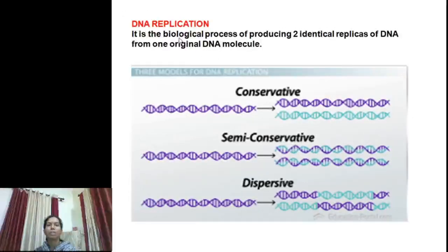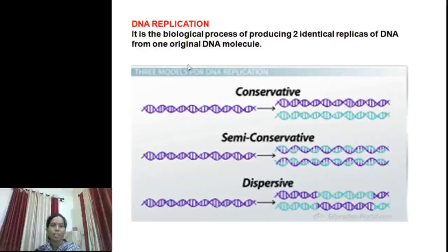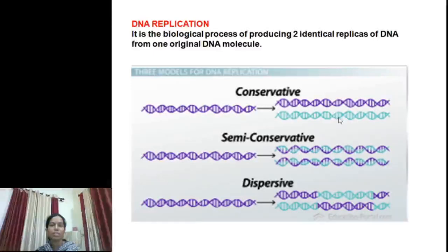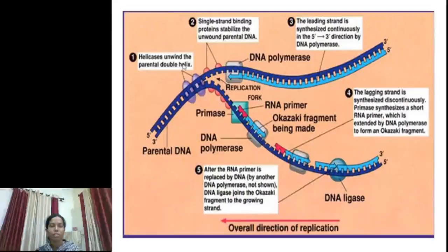DNA replication is the biological process of producing two identical replicas of DNA from one original DNA molecule. Three models are proposed for DNA replication: conservative, semi-conservative, and dispersive. In conservative replication, the old strand remains isolated and a new strand is formed. In semi-conservative replication, one strand is new and one strand is old. In dispersive replication, some parts are of the new strand and some of the old strand. Out of these three, semi-conservative is the most widely studied.